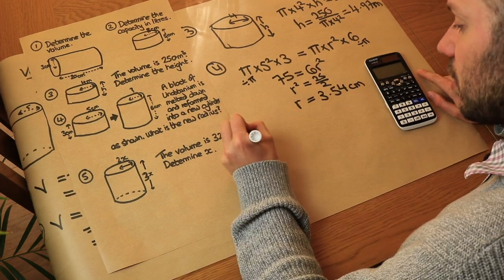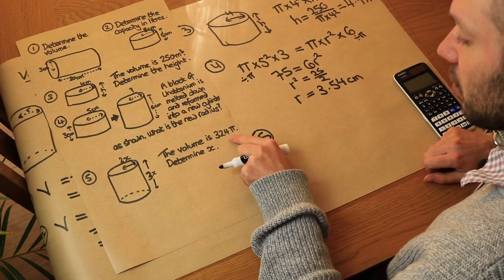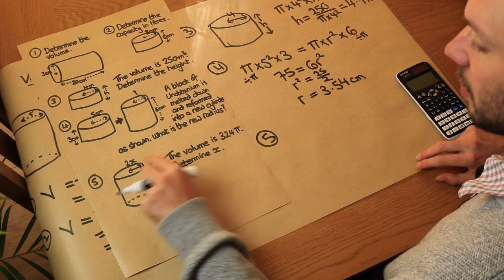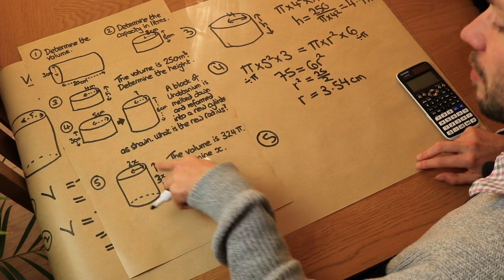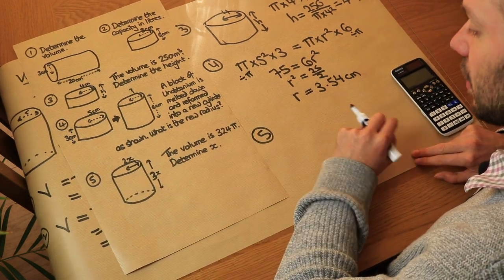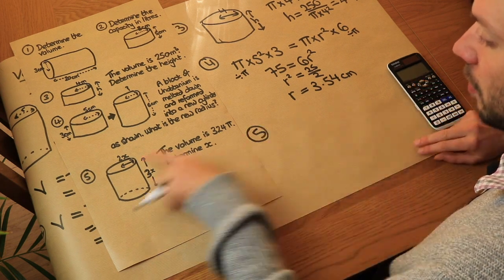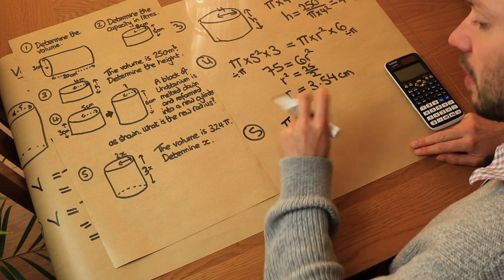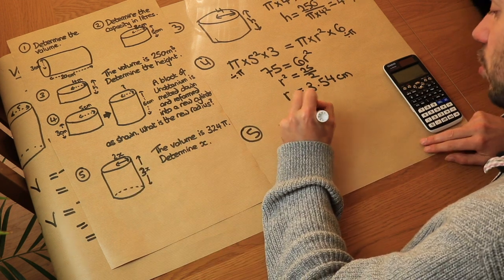And then finally we've got question 5. The volume is 324 pi, determine x. And then we've got these algebraic sides this time. So we've got a radius of 2x and we've got a height of 3x. So let's do the usual thing.